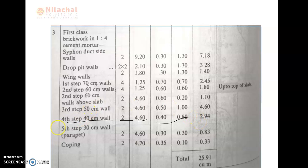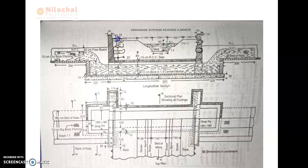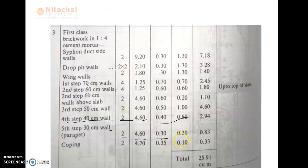Then we go to the next step — the 30 cm parapet wall. The 30 cm parapet also has 2 numbers. The length is equal to 4.20, which is equal to the flat length. The breadth for the 30 cm wall is also 30 cm, that is 0.30 m. The height is provided from this point to this point, which is 50 cm. So the height is 0.30 m.